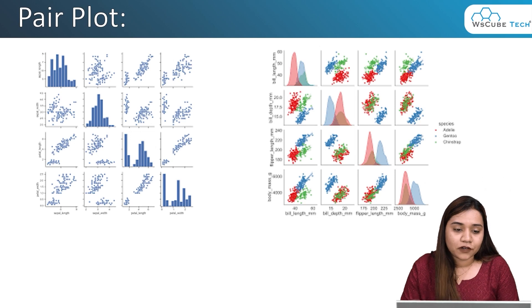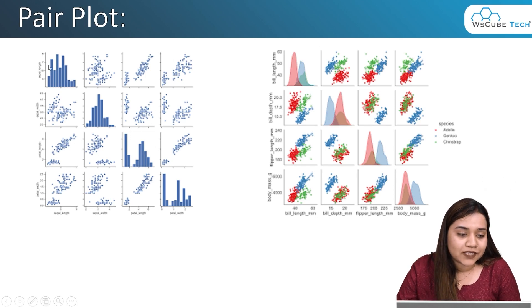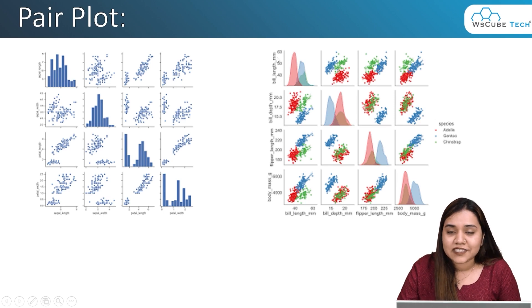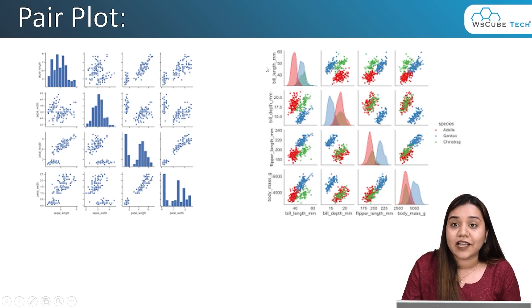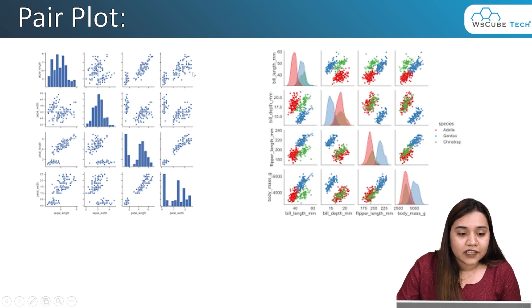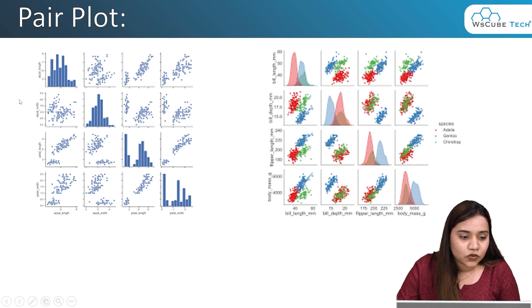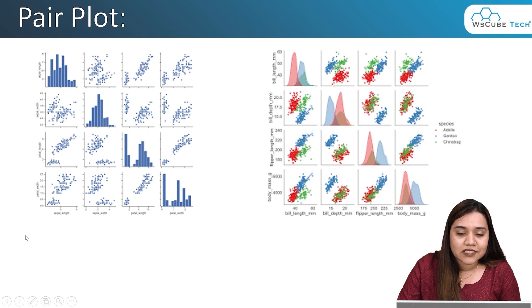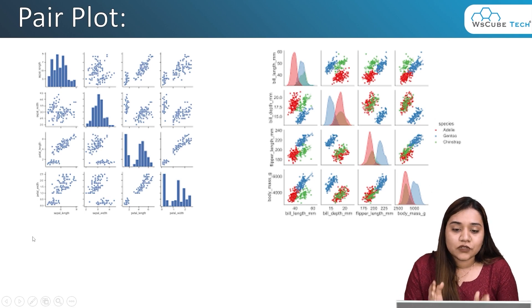This is how a pair plot looks. On the left-hand side you will notice a diagonal which has histograms, and on the right-hand side plot you can see a diagonal which has KDE. We will also be talking about how to define that in our session. We can see scattered data and on the x-axis we have four columns, and on the y-axis we again have four columns.